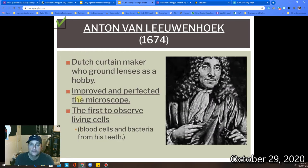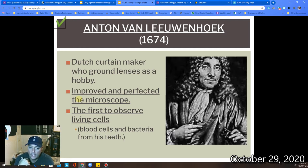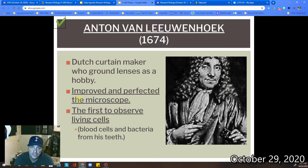After Hooke comes van Leeuwenhoek. A couple of years later, we're looking at the late 1600s. He was a curtain maker, but he had this hobby where he would grind lenses. He was actually able to improve the microscope and perfect it by using lenses that he ground himself — much, much better than what Hooke had. He was actually the first one to observe living cells in this new compound microscope. The living cells were blood cells and he was able to scrape some bacteria off of his teeth and look at those cells underneath the microscope.